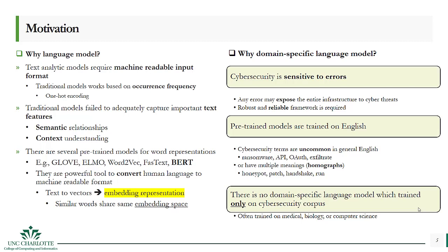On the other hand, many existing off-the-shelf language models such as BERT have been trained on general English and are good at representing regular English words but not advanced language such as cybersecurity. For example, words such as ransomware, API, or exfiltrate might be very uncommon in general English, so they may have improper representations. Meanwhile, words like honeypot, virus, or handshake carry totally different meanings in cybersecurity compared to general English.